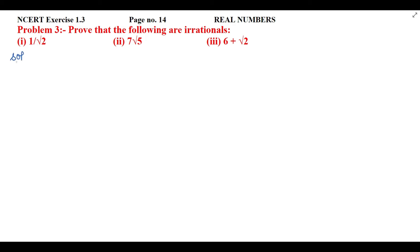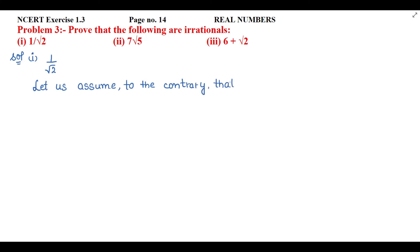Let's look at the first one: 1 by under root 2. This is the contradiction method. That means we don't say that the number is irrational directly. Instead, we assume to the contrary that 1 by under root 2 is rational.